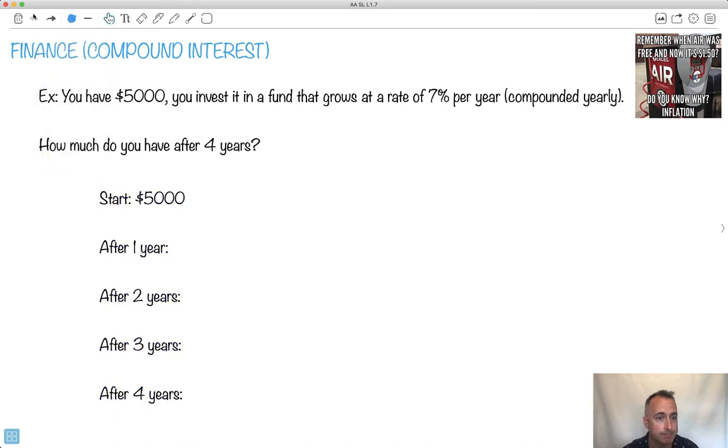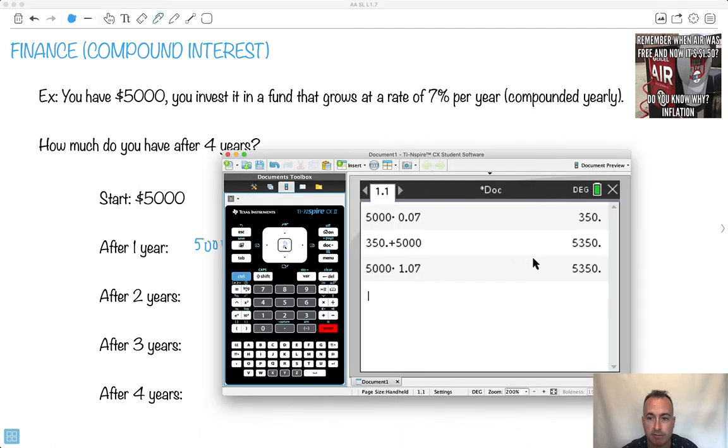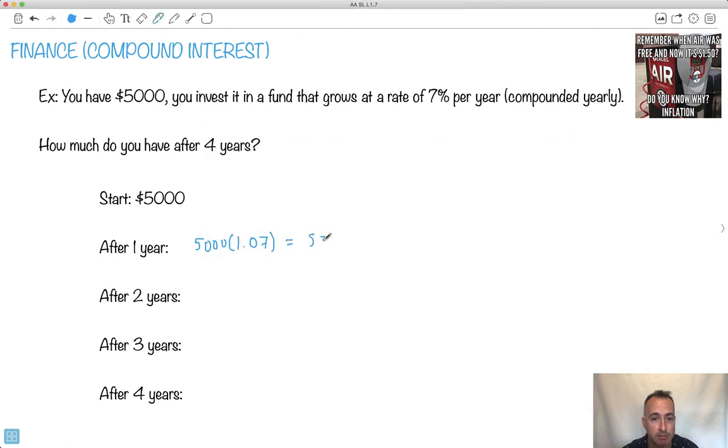So I'm going to use that idea right here. So I'm actually going to say, okay, well, after one year, how much is remaining? Well, there's going to be $5,000 times 1.07, right? So that will give me that number. What was it again? It was 5,350. Alright. So if I have that, so 5,350.